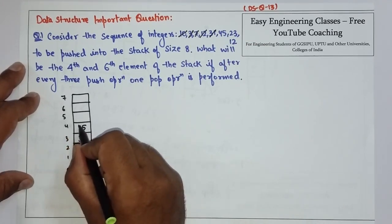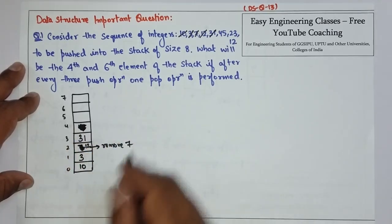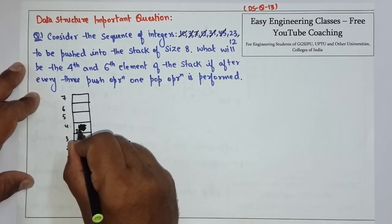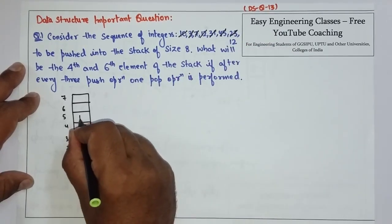So, what we have to do. We have to delete the top most element from, according to the pop operation. So, we have deleted this top most element. Then comes 23. So, add 23 here. And after that 12.